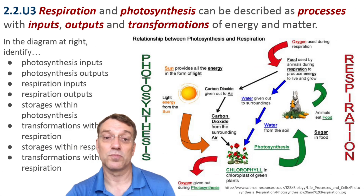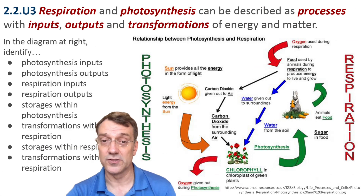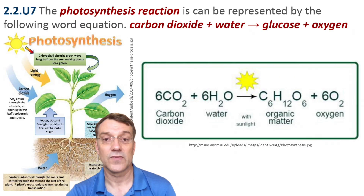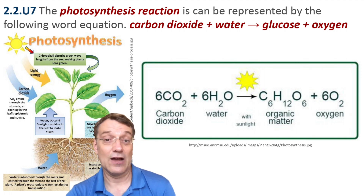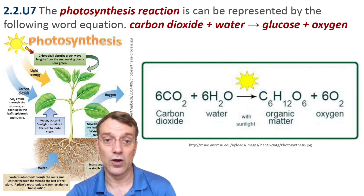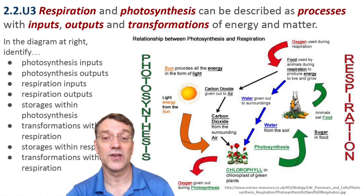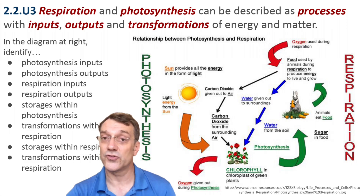When analyzing these processes as systems, you need to identify inputs, outputs, and transformations. For photosynthesis, inputs include light energy, carbon dioxide, and water. The outputs are glucose and oxygen. The transformation occurs within chloroplasts, converting light energy to chemical energy that's stored in glucose.